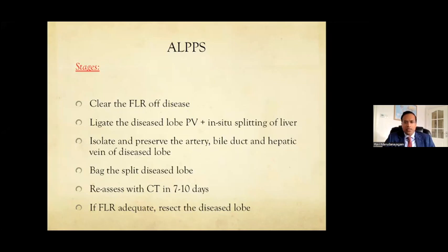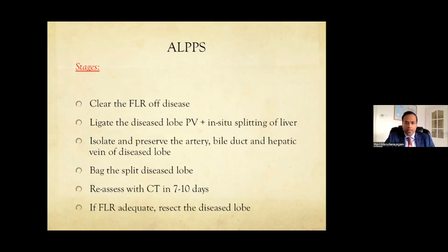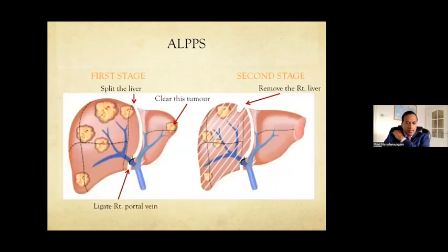In the first stage you isolate and preserve the artery and bile duct, and isolate the hepatic vein with sloops using dissolvable thread — not non-dissolvable — so if you don't go back you can safely leave them. Importantly, place a non-adhesive covering like Seprafilm on the split liver surface because at the second operation two to three weeks later it's completely plastered with adhesions. Reassess in seven to ten days — if FLR is adequate, proceed. There is also partial ALPPS where you only partially divide the liver to trigger the hypertrophic mechanism.